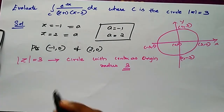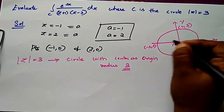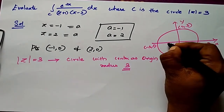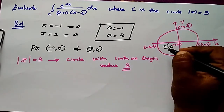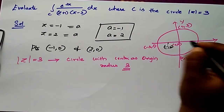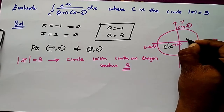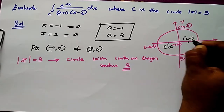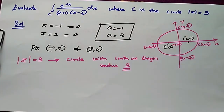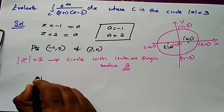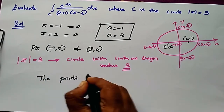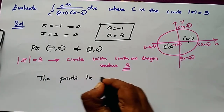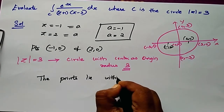The point z = -1 and the point z = 2 are both within this circle. So both singular points lie within the circle.